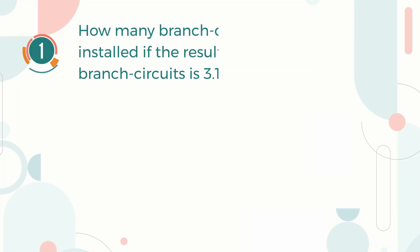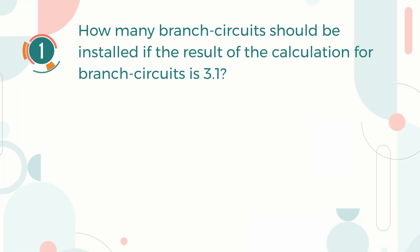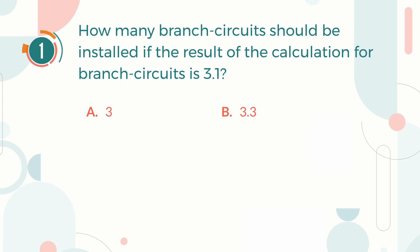Number 1. How many branch circuits should be installed if the result of the calculation for branch circuits is 3.1? A. 3. B. 3.33. C. 3.5. D. 4.